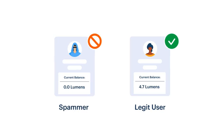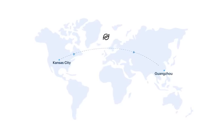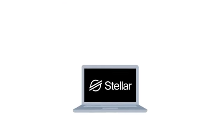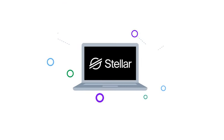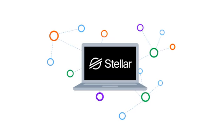Lumens are a critical component of the Stellar protocol. They allow it to be efficient, scalable, and they serve as a universal translator for assets. So you can move funds cheaply, but not too cheaply, with the transparency and security only a decentralized blockchain can provide. That's a big step forward for financial infrastructure, all thanks to Stellar.